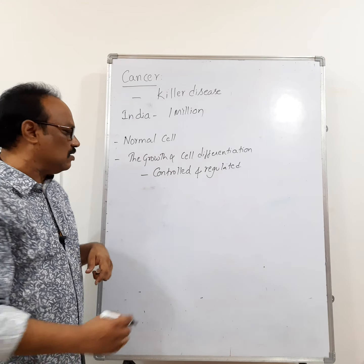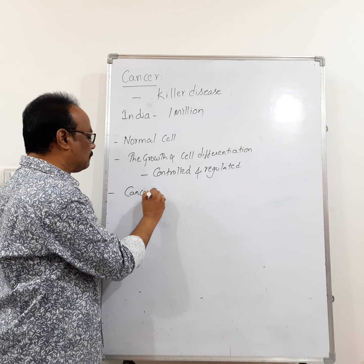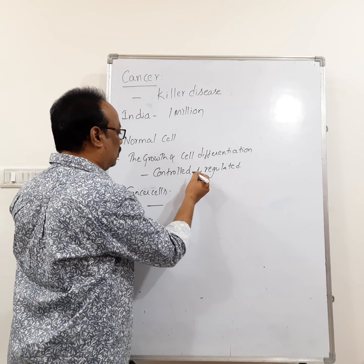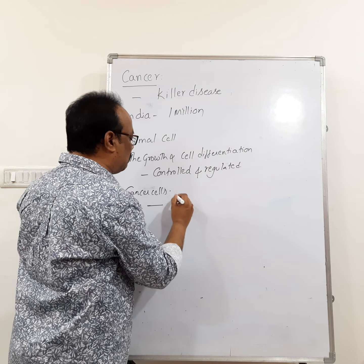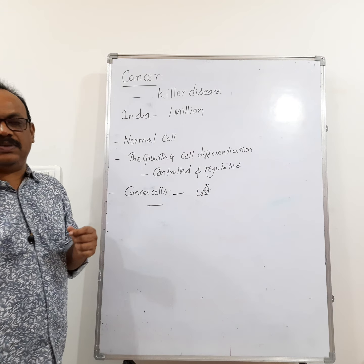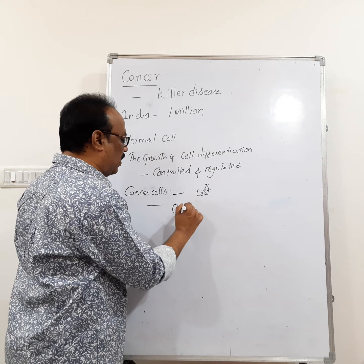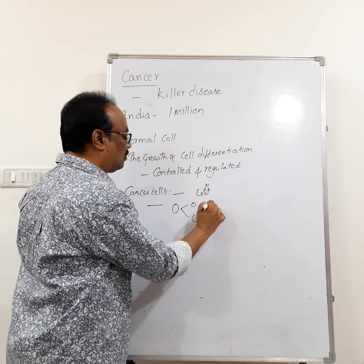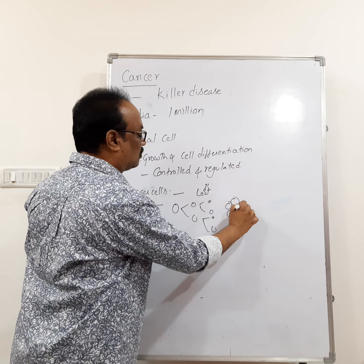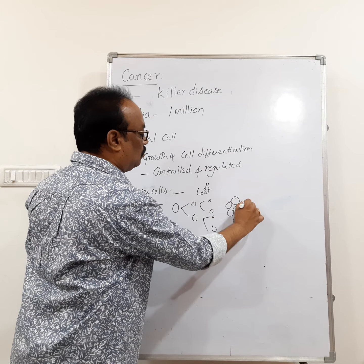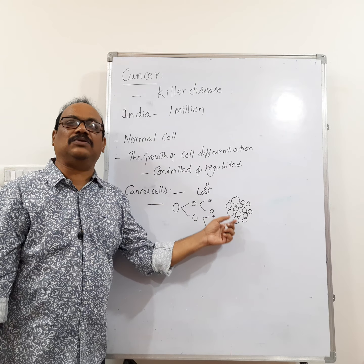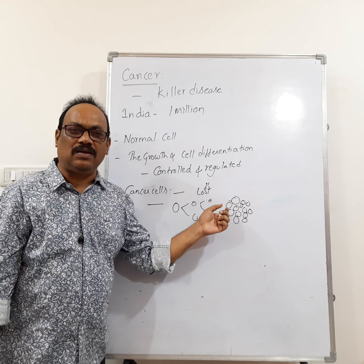Then what happens in the cancer cells? In the cancer cells, the control and regulation is completely lost. The cells begin to divide continuously and form into a mass of cells. This mass of cells is called a tumor or cancer.